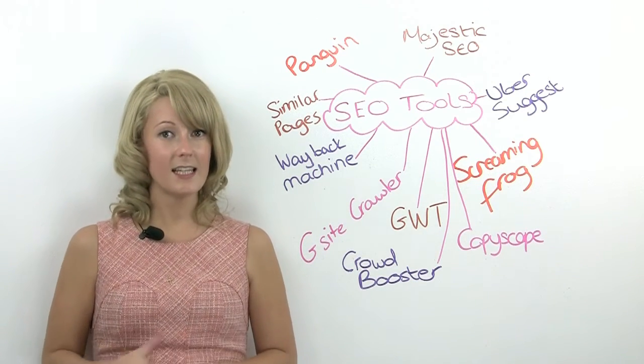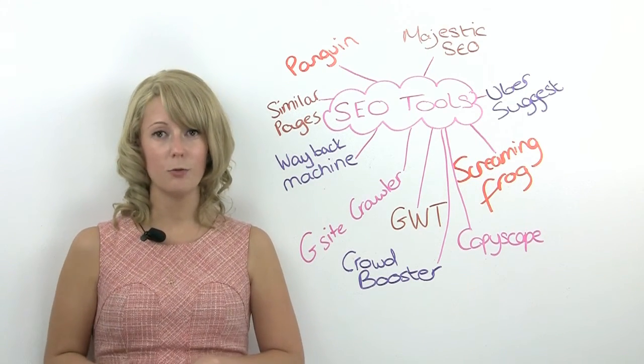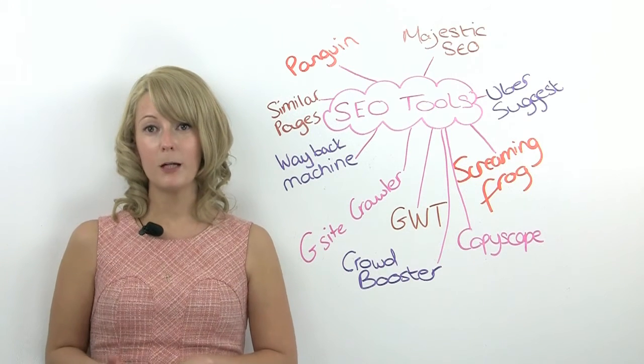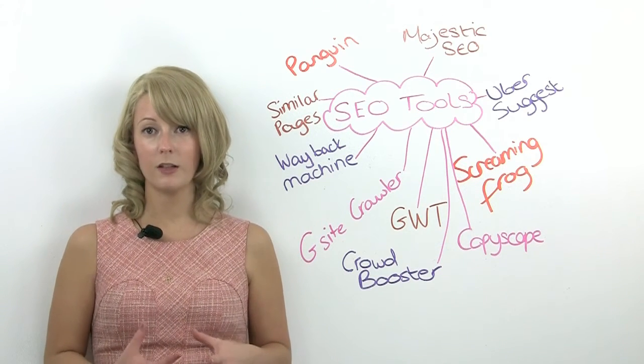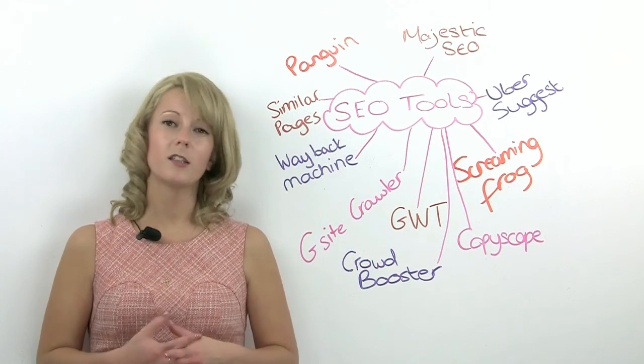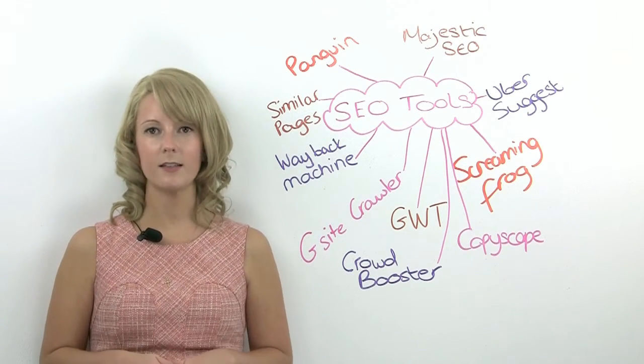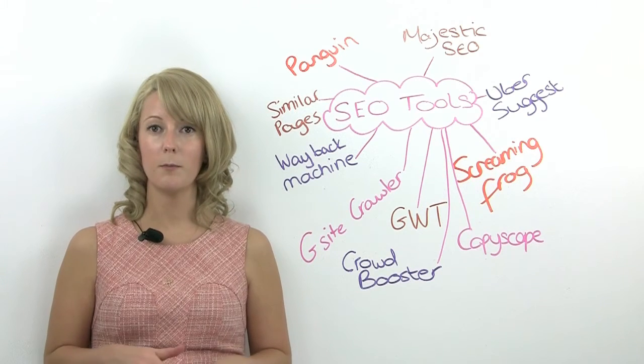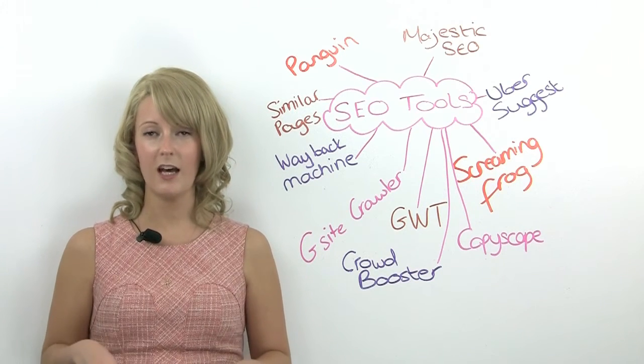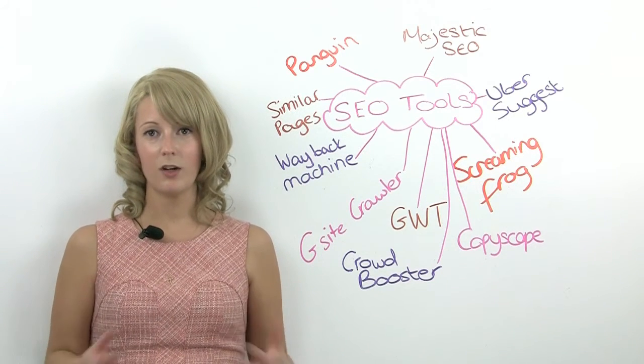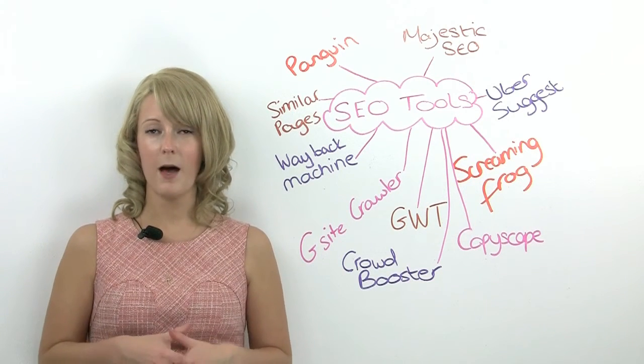Ubersuggest is a keyword research tool. It's brilliant because it's based on current searches — so anything that's in Google Suggest at the moment, it scrapes the data from that.